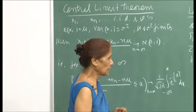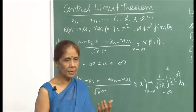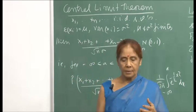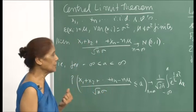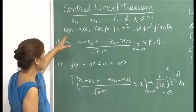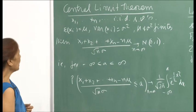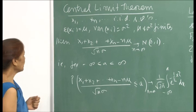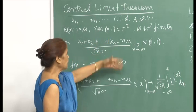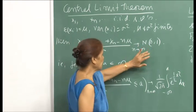As stated in the last lecture, after having stated the central limit theorem, we will now talk about its importance. We will see how important and widely used the theorem is. The central limit theorem says that if you have a sequence of identically independently distributed random variables with finite mean and variance, then the sum x1 plus x2 plus xn will have mean n·mu and variance n·sigma squared, and this will converge to N(0,1) as n goes to infinity.